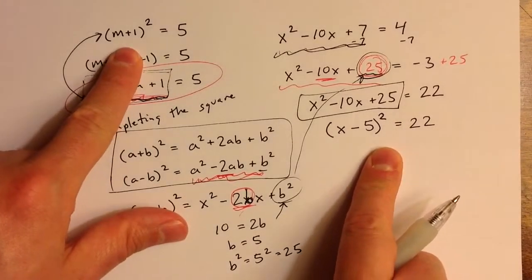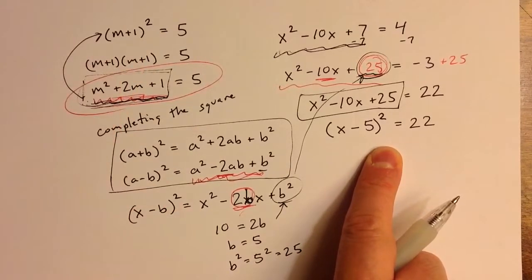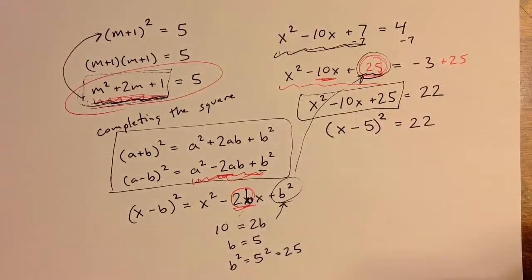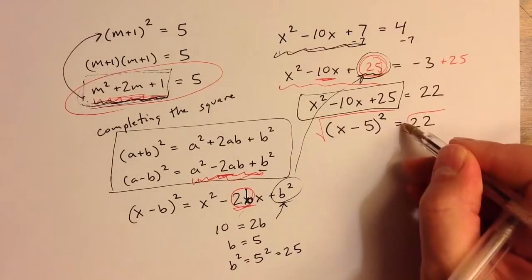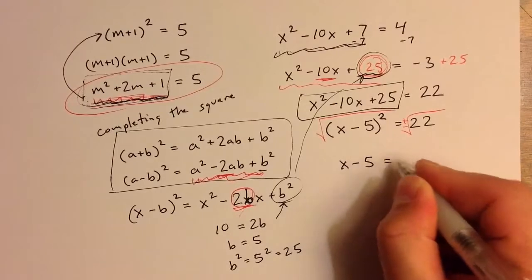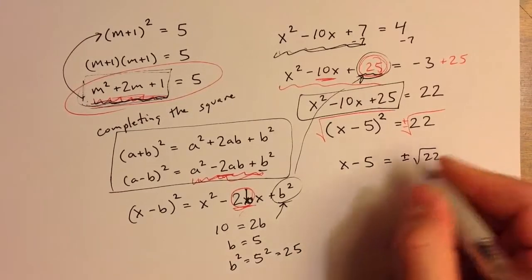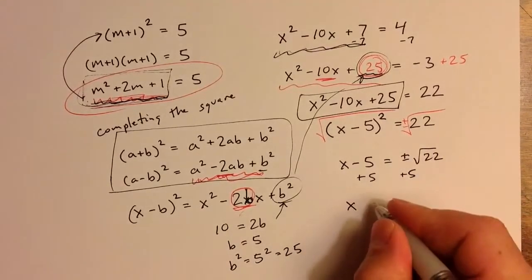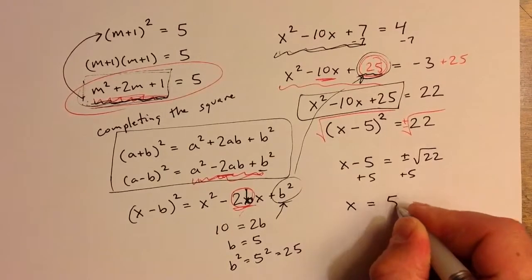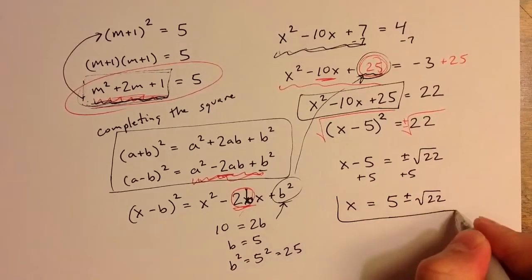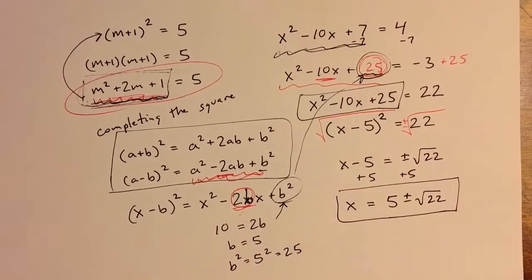Now this is an equation that we can solve very much like the one in that other video, where I can take the square root of both sides. If I take the square root of this expression and take the square root of 22, I need to take both the positive and negative possible solutions, so I get plus or minus the square root of 22. Then I can add 5 to both sides to finish solving the equation, so x equals 5 plus or minus the square root of 22. Those are two different solutions.